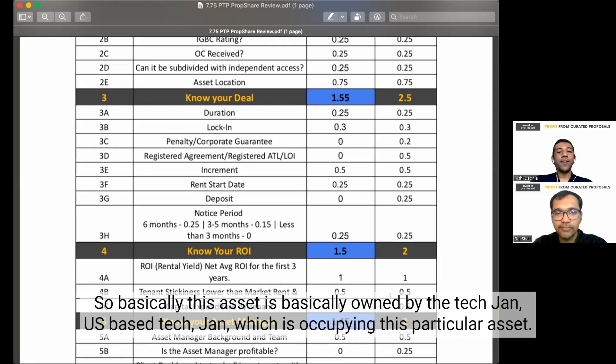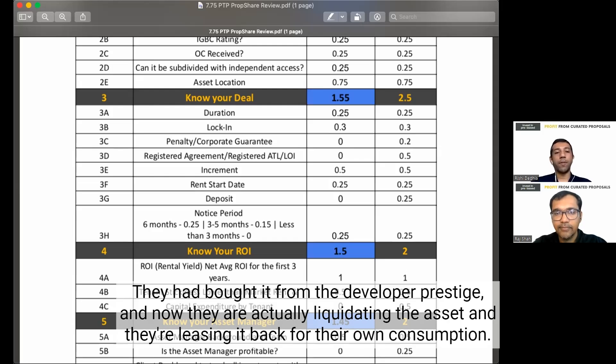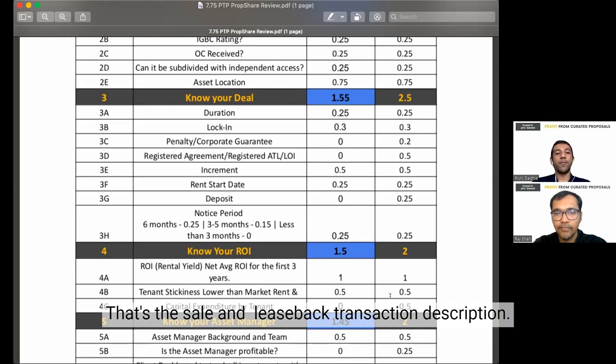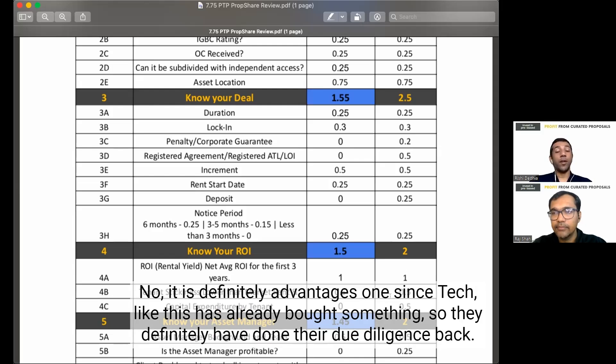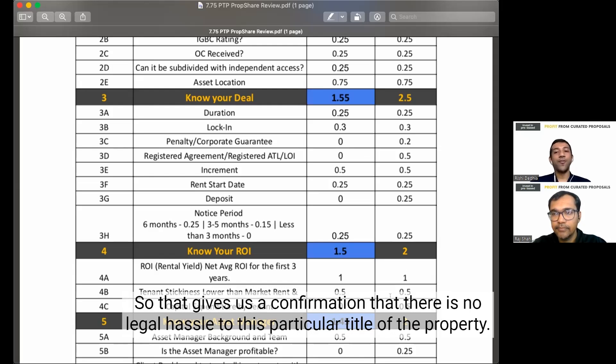Could you explain sale and leaseback? Yeah, sure. So basically this asset is owned by the tech giant, US-based tech giant, which is occupying this particular asset. They had bought it from the developer Prestige. And now they are actually liquidating the asset and they are leasing it back for their own consumption. That's the sale and leaseback transaction description. Is that more advantageous or do you see as a positive that it's a sale and leaseback versus just a simple? No, it is definitely advantageous. One, since a tech giant like this has already bought something, so they definitely have done their due diligence. So that gives us a confirmation that there is no legal hassle to this particular title of the property.